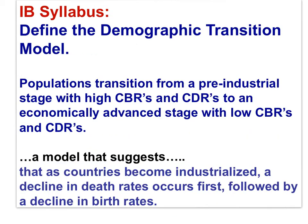So here's the first IB syllabus statement: define the demographic transition model. The demographic transition model is that populations transition from a pre-industrial stage with high crude birth rates and high crude death rates to an economically advanced stage with low crude birth rates and low crude death rates.